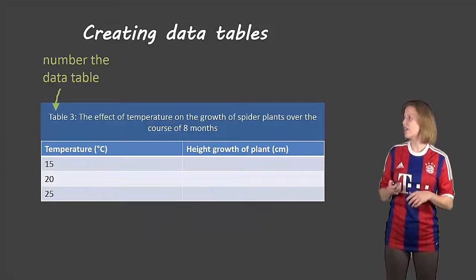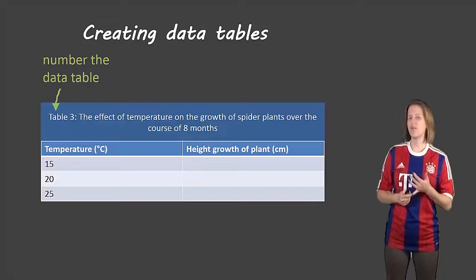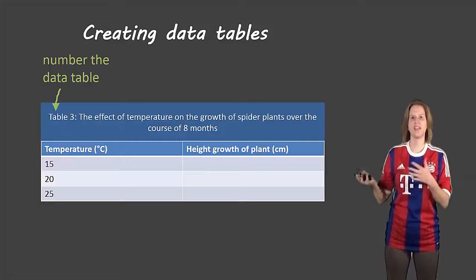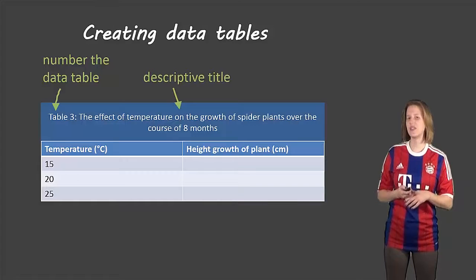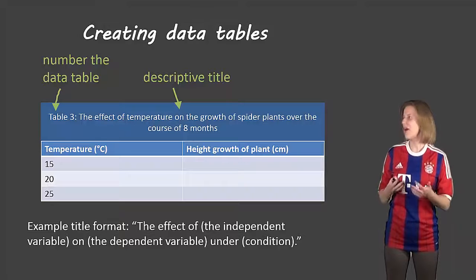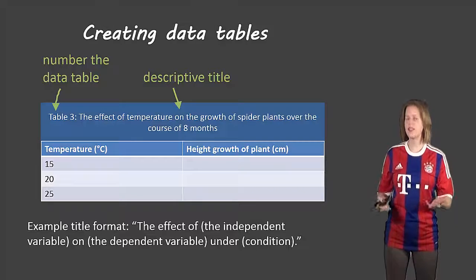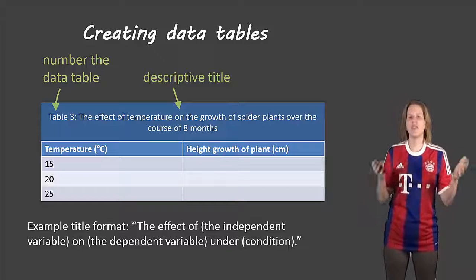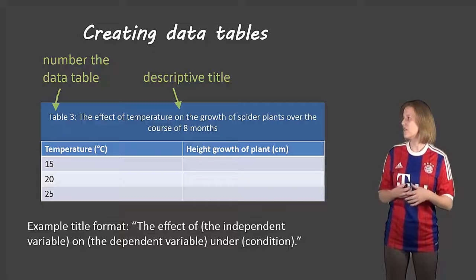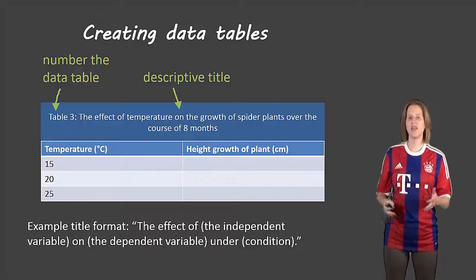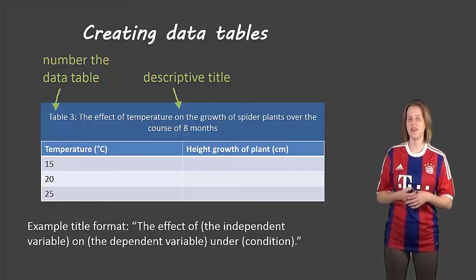Now let's take a look at the title. You need to first of all number the data table so that you can refer to it later in your analysis. Then you need a descriptive title. This is just an example format, but something like the effect of—and then you'd write the independent variable—on, you write the dependent variable, under certain conditions. So in this example, the effect of temperature on the growth of spider plants over the course of eight months. So that gives plenty of information about what's actually happening in that data table.